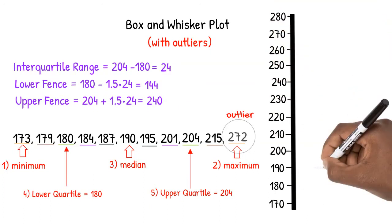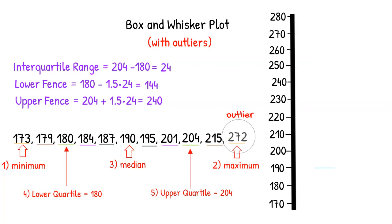We then create our box by putting a line at 190 for our median, a line at 180 for our lower quartile, and a line at 204 for our upper quartile. We close the box by joining the three lines.